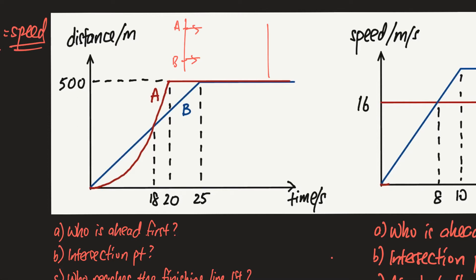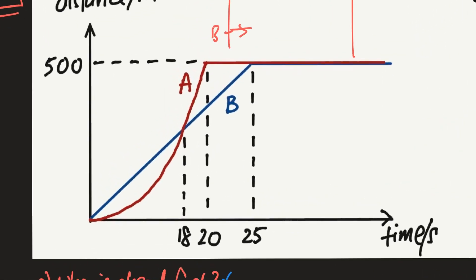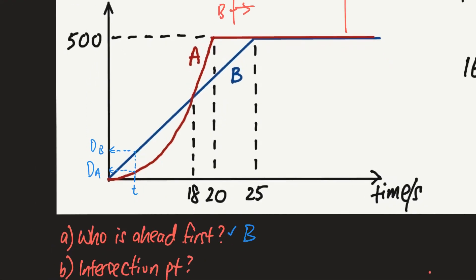Now let's answer some questions regarding the cyclists. First: who is ahead at the beginning of the race? There are two ways to look at this. If you pick a specific time and look at the y-axis (the distance), the distance traveled by cyclist A is smaller than that of cyclist B for the same time — so B is ahead first. Another way: both start from rest, but the gradient of B is greater, so the speed of B from the beginning is higher than A's, meaning B will be ahead first.